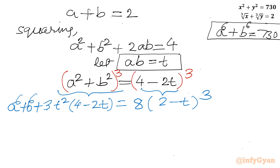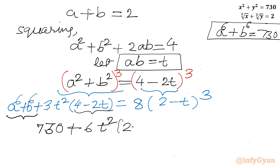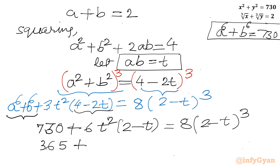Now let me plug in the value of a⁶ plus b⁶, which is 730. So I can write 730 plus, taking 2 common from the bracket, 2 times 3t squared times (2 minus t), equal to 8 times (2 minus t) cubed. This equation is divisible by 2, so dividing gives 365 plus 3t squared times (2 minus t) equal to 4 times (2 minus t) cubed.